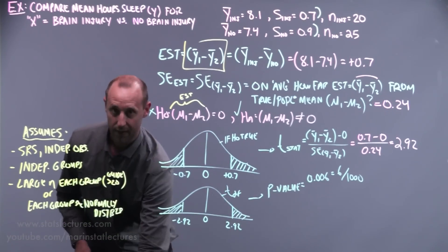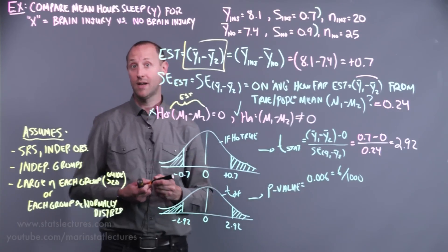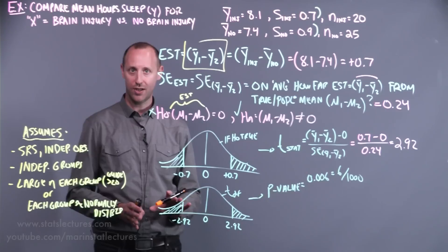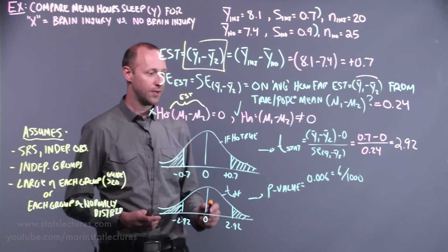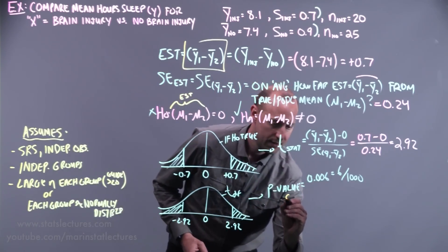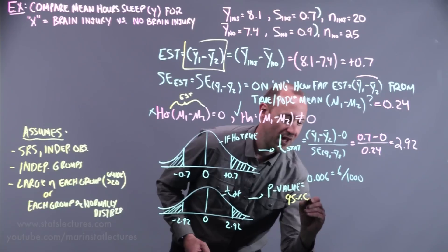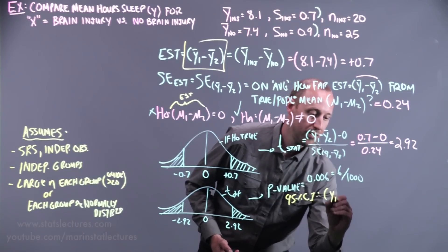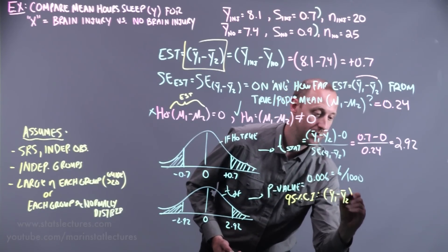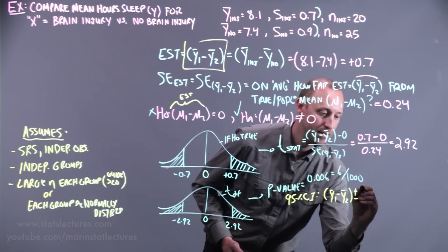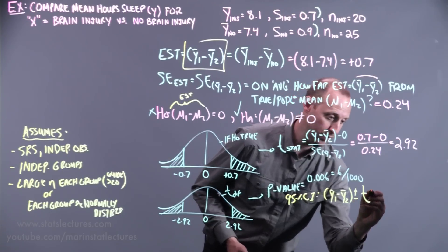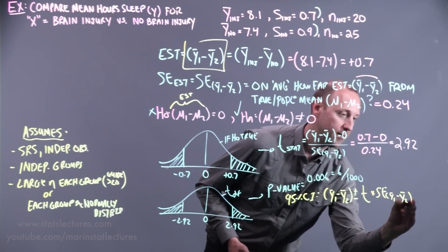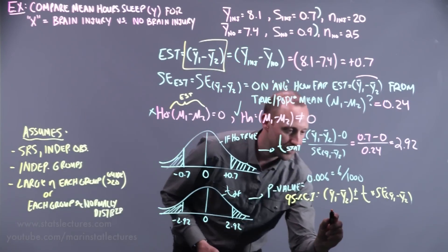As we've noted, we should always attach a confidence interval with a hypothesis test. It gives us a slightly different look at the same problem. Let's look at a 95% confidence interval. We're going to go from our estimate plus or minus t-value, roughly 2, standard errors of the estimate.